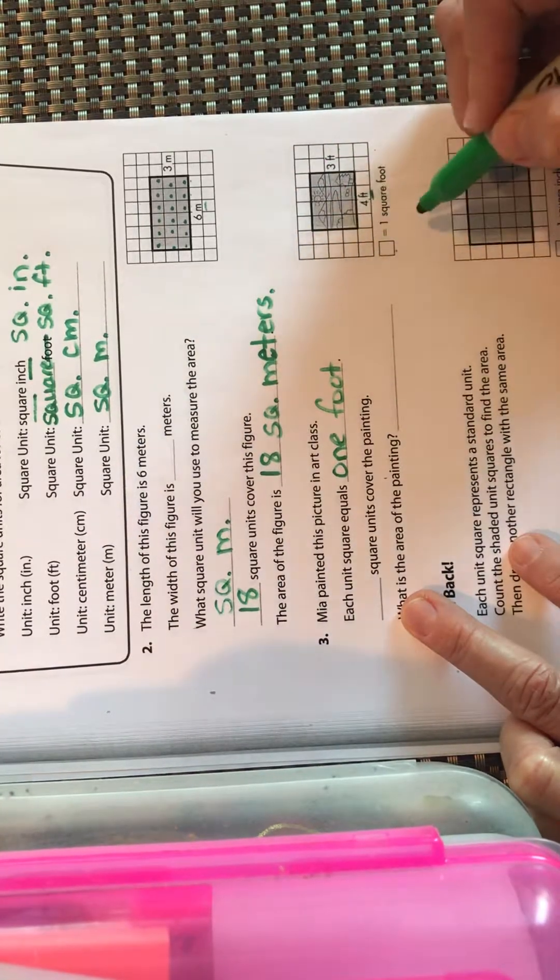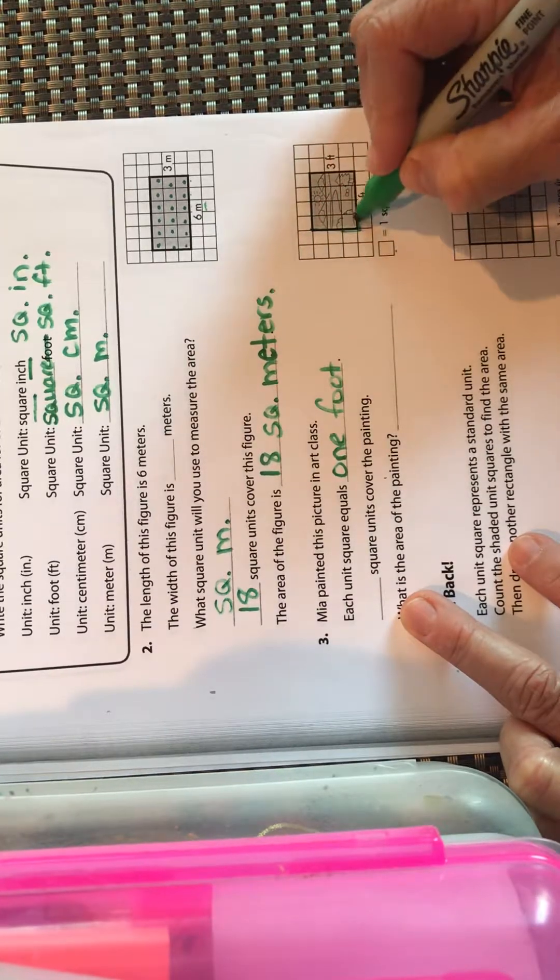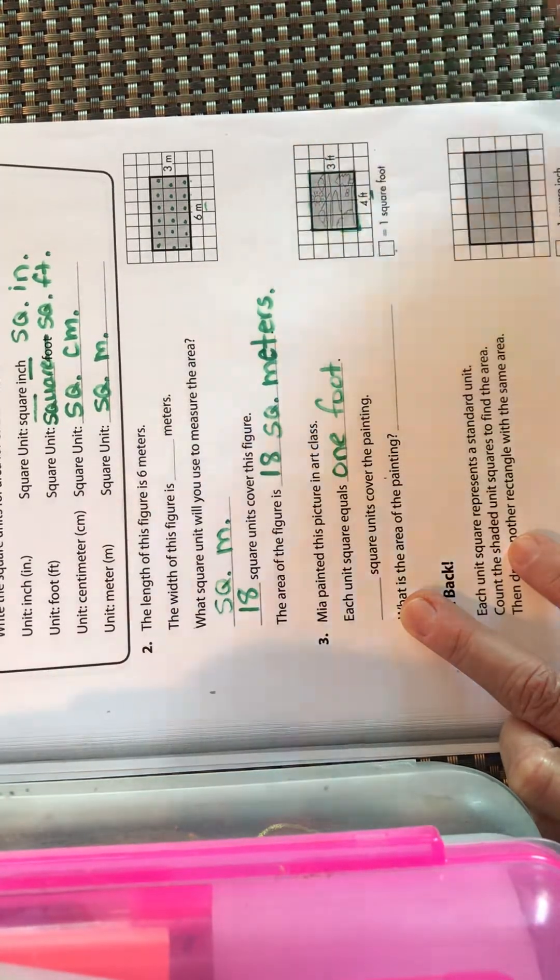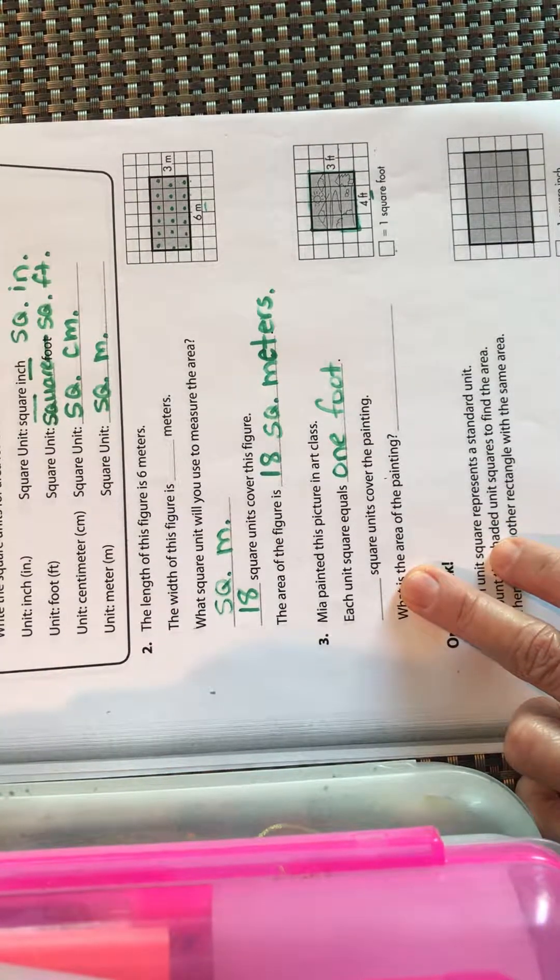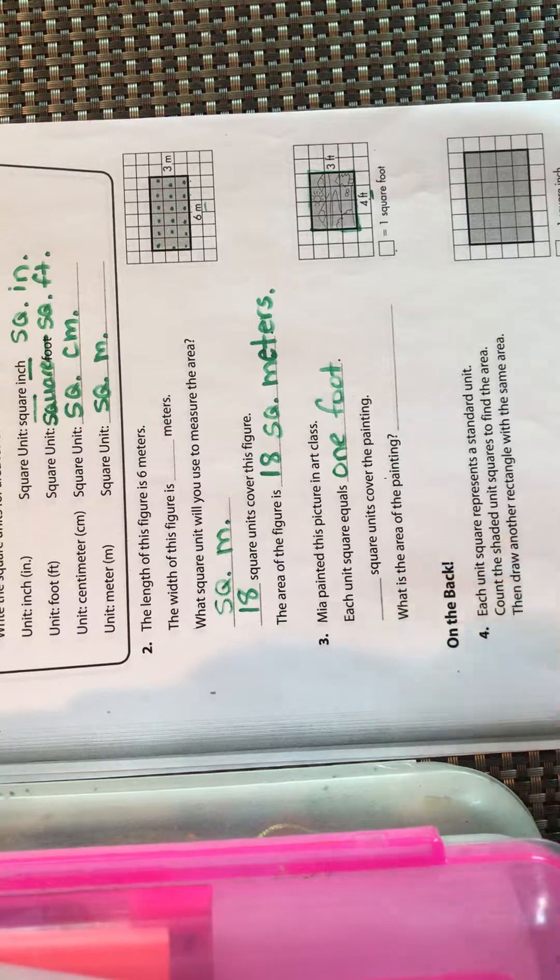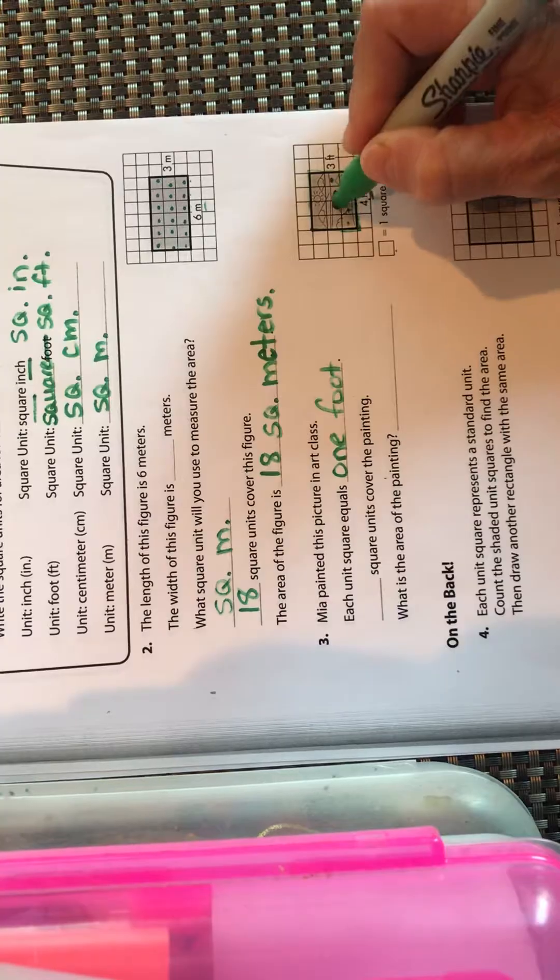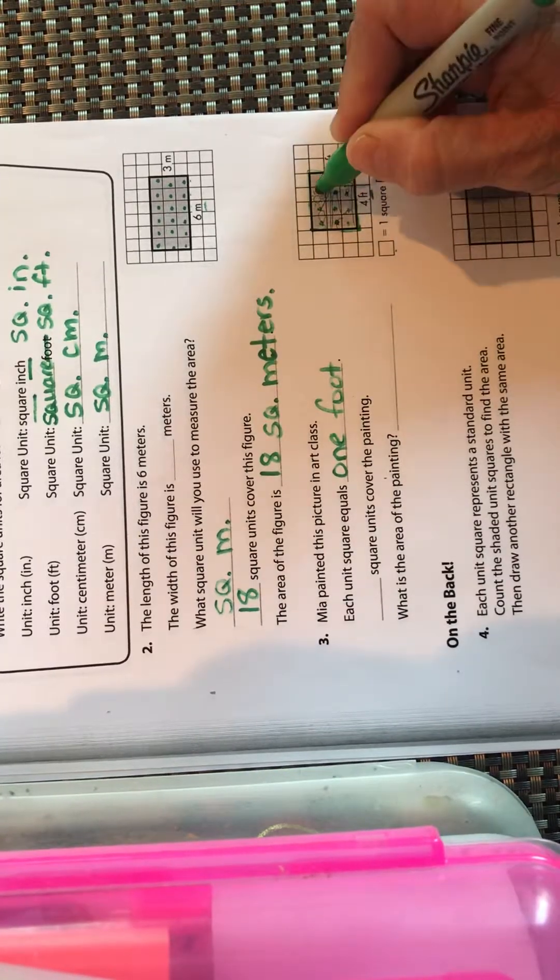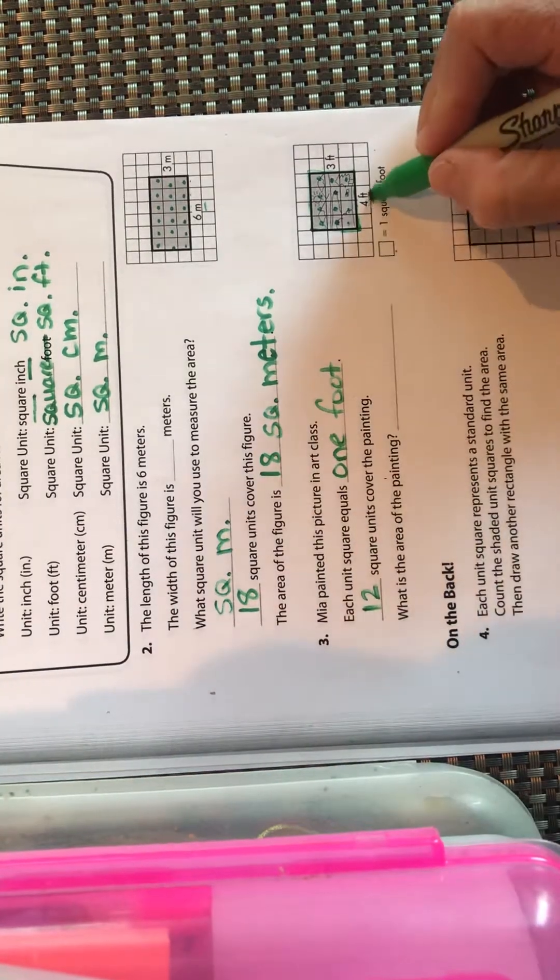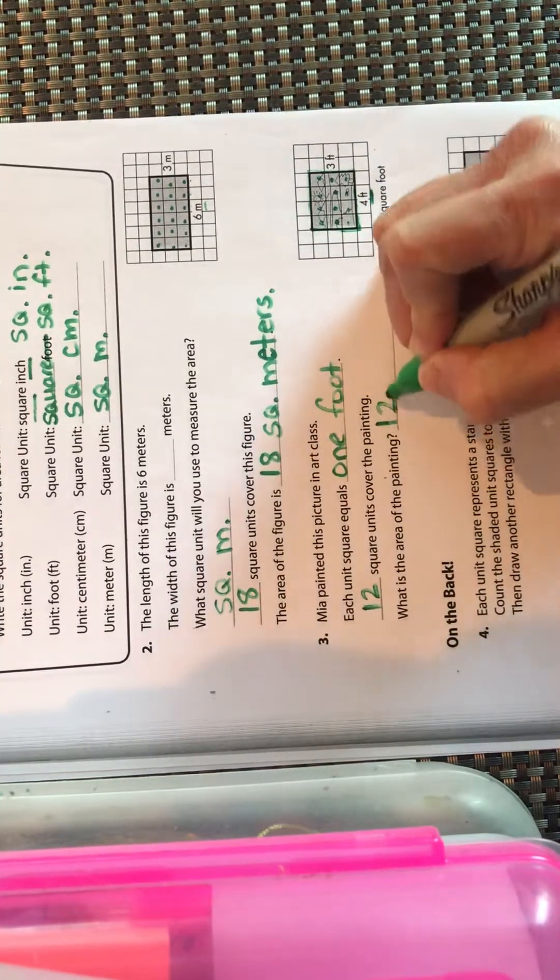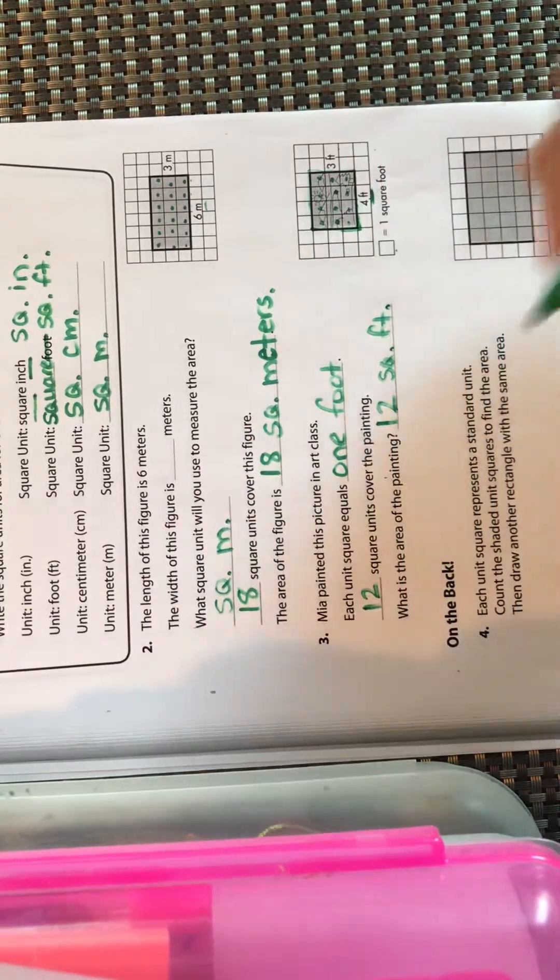Pause the video, count up how many squares and write that right there. Okay, one, two, three, four, five, six, seven, eight, nine, ten, eleven, twelve. Twelve square units cover the painting. So what is the area? It's in square feet, so it's 12 square feet, or you could write out square feet, whatever you're most comfortable with.